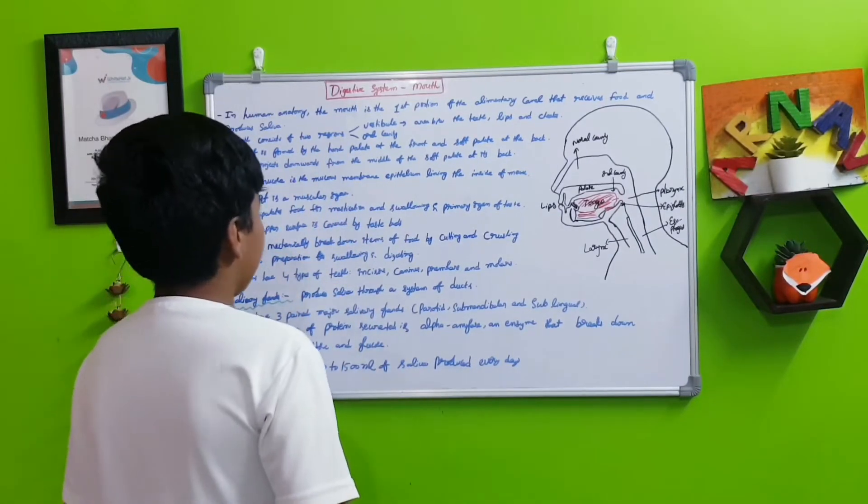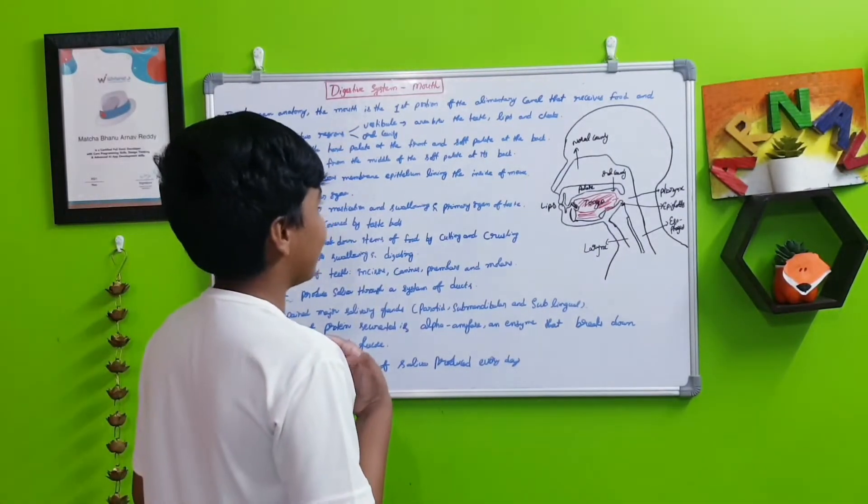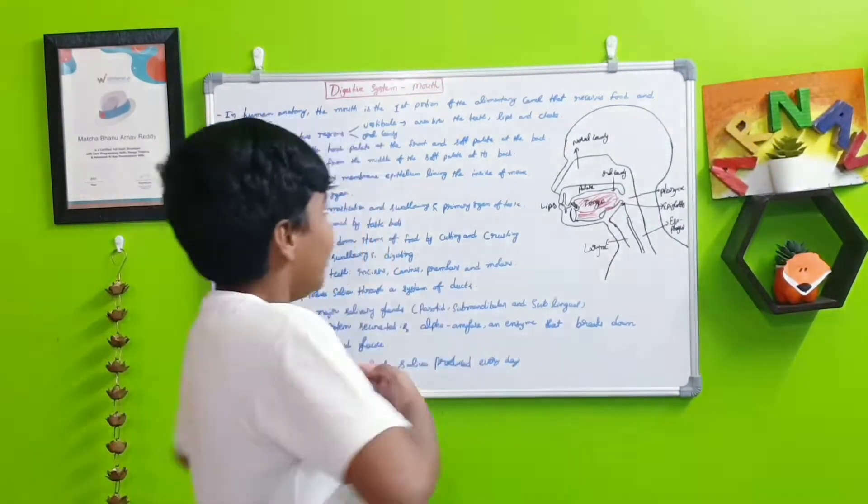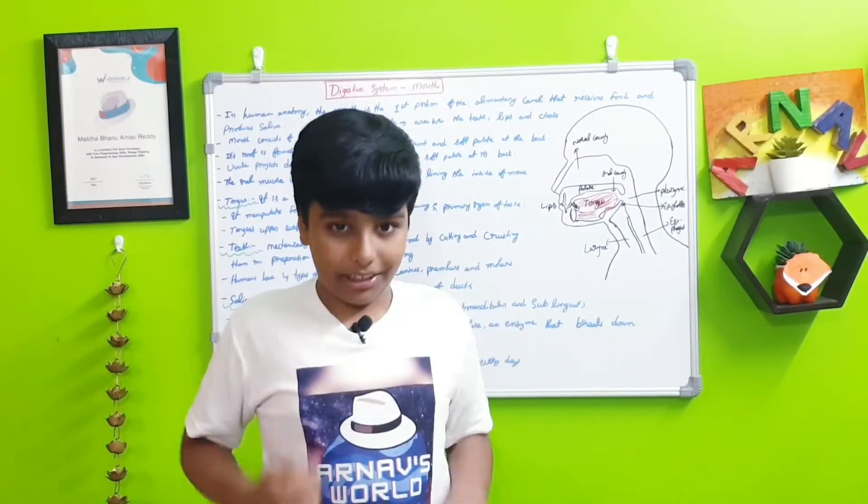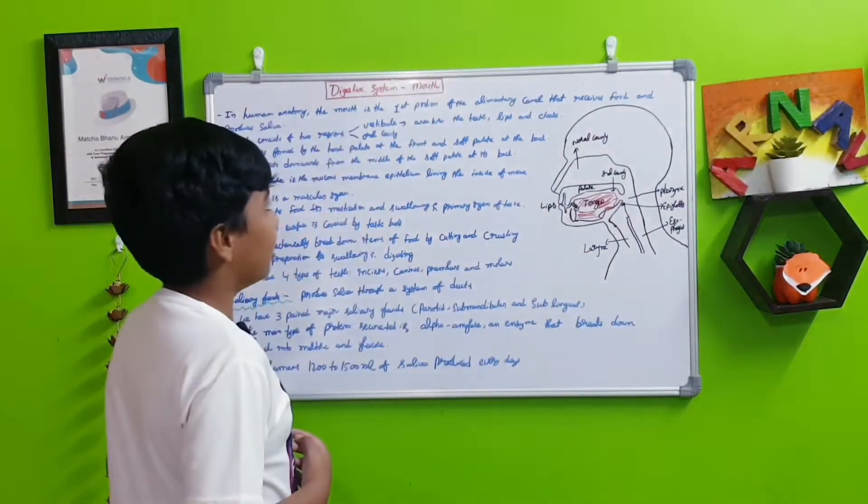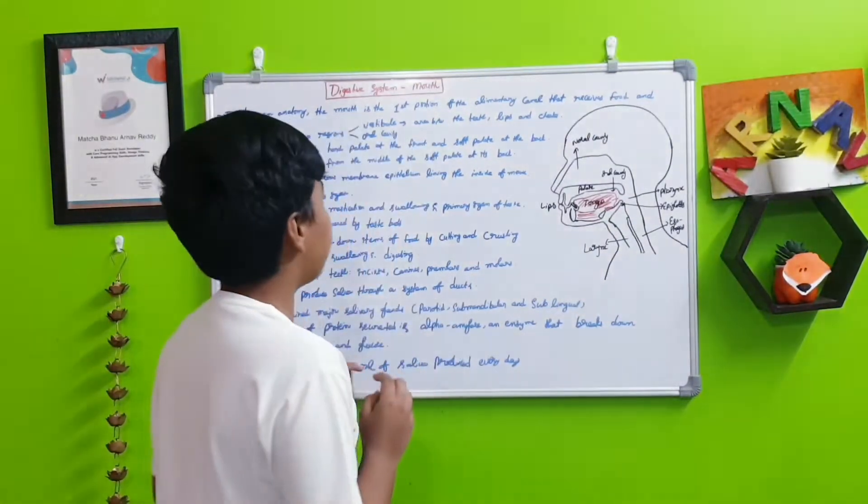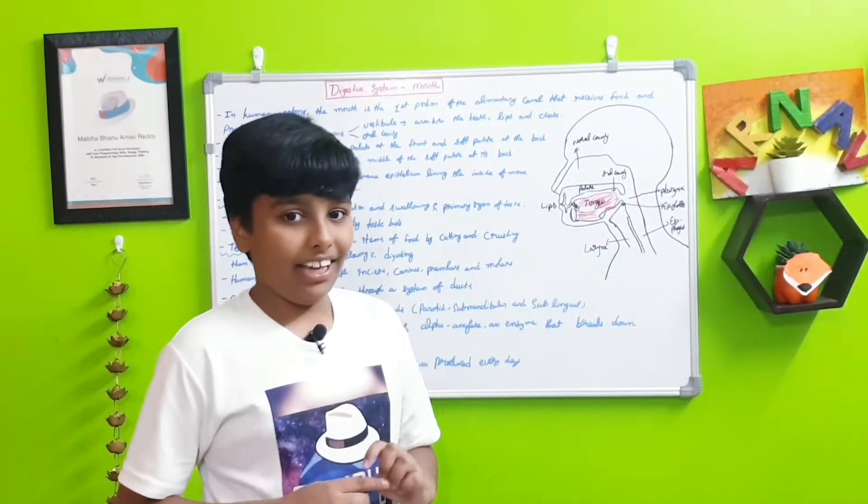In human anatomy, the mouth is the first portion of the alimentary canal that receives food and produces saliva. In the digestive system there is a tube from up to down, that is known as the alimentary canal. This is the first portion, this portion is known as the mouth.